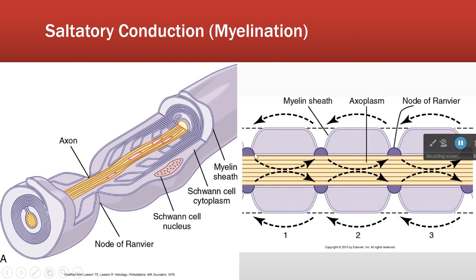So depolarization here — a bunch of sodium rushes in, it doesn't stay put, it drifts and depolarizes the next segment. That causes sodium to come in there, which drifts and activates the next node. So instead of having to activate each little bit of membrane, we get to skip a bunch and jump to the next node, then the next node — so it's much faster.